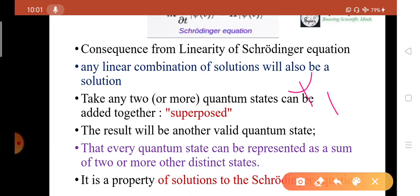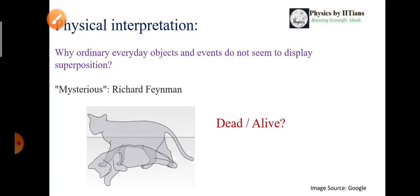If psi 1 is the wave function which satisfies Schrödinger equation, psi 2 is another wave function which also satisfies the Schrödinger equation, this combination or superposition of psi 1 and psi 2 will also give you the solution of the Schrödinger equation. The question is how to understand it physically or how to physically interpret.